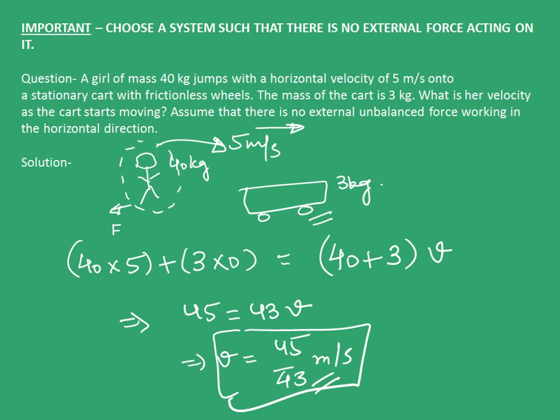Similarly, when the girl jumps on the cart, there is a force on the cart which is an external force if only the cart is considered our system. If we consider both the girl and the cart to be our system, these two forces cancel each other and hence there is no external force acting on our system. Hence we can apply law of conservation of momentum.